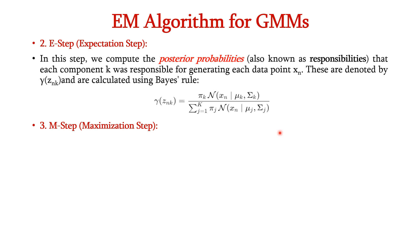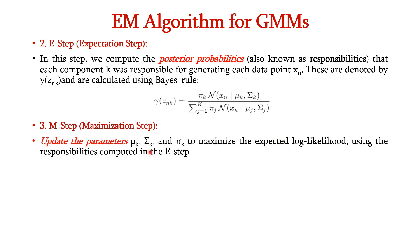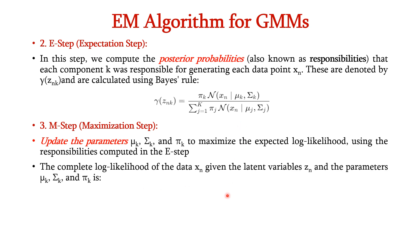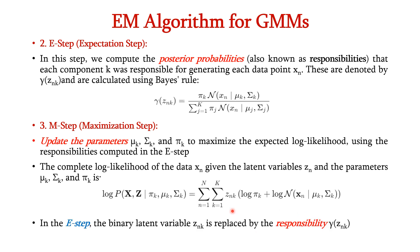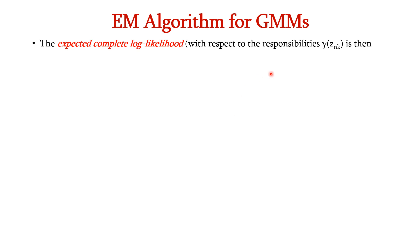In the M step, we update the parameters μk, σk and πk to maximize the expected log likelihood using the responsibilities computed in the E step. The complete log likelihood of xn given the latent variables zn and the parameters μk, σk and πk is expressed as shown here, taking the log of πk and the normal distribution. The latent variable term znk is replaced with the responsibility component γ(znk) computed in the E step, giving us the expected log likelihood with respect to γ(znk).